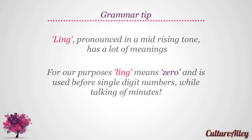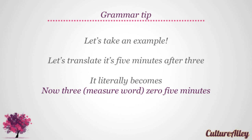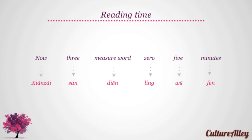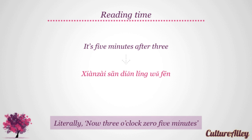Here's a quick grammar tip: ling, pronounced in a mid-rising tone, means zero and is used before single digit numbers while talking of minutes. While writing single digit numbers, we write them as 05, 07, etc. For example, let's translate 'it's five minutes after three'. It literally becomes: now, three, measure word, five minutes. The break-up is: now = xiàn zài, three = sān, measure word = diǎn, zero = ling, five = wu, minutes = fēn. So it's five minutes after three translates as xiàn zài sān diǎn ling wu fēn.